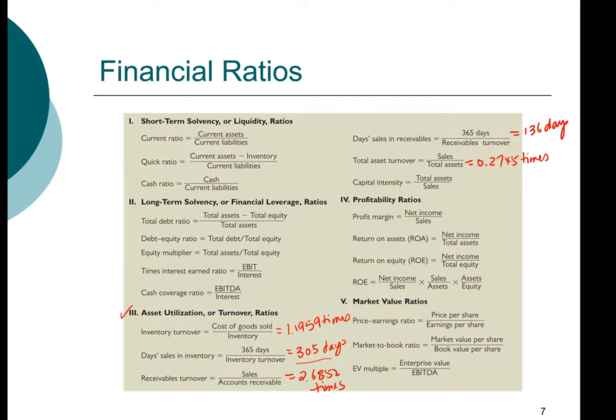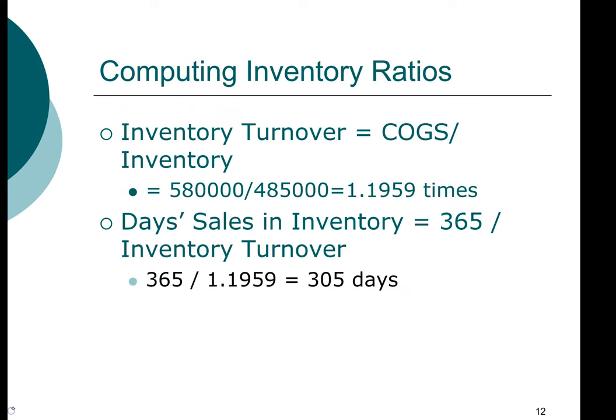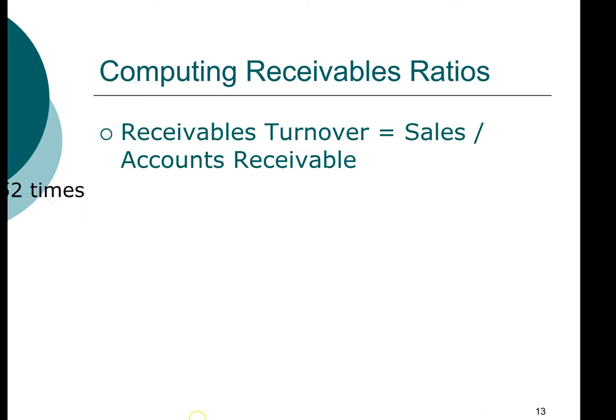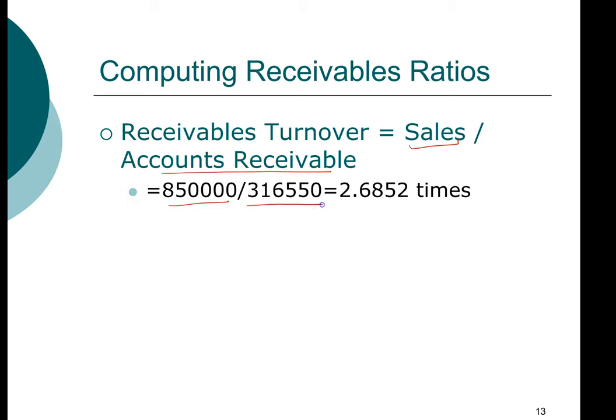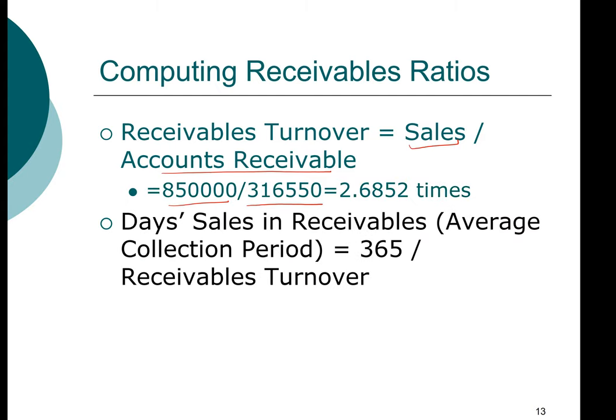Hopefully you get the same answers as I do. And even if you don't, there are additional resources that I want to point you to so you can check your work further. In the slides included in this file, there are more detailed calculations. On this individual slide, it shows you the value for cost of goods sold, the value for inventory. So you can check where you make mistakes if you do make some. The same is true for receivable. We have revenue sales is $850,000 and accounts receivable is $316,550. And the days sales in receivable turns out to be 136 days.